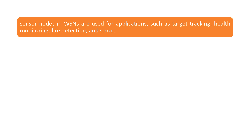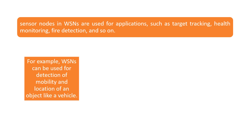These sensor nodes in WSNs are used for a variety of applications such as target tracking, health monitoring, fire detection, and so on. For example, WSNs can be used for detection and mobility and location of an object like a vehicle.